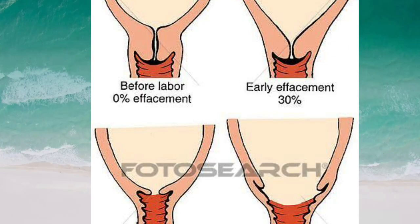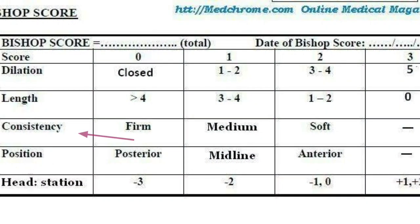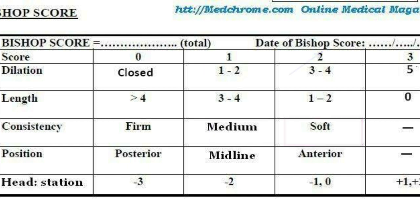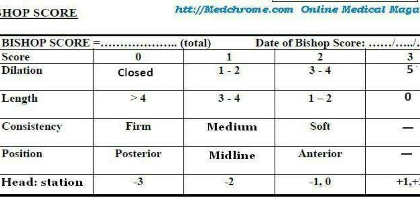The third parameter is consistency of cervix. On vaginal examination, if the cervix is firm to touch, the score is zero. If the consistency is medium, the score is one. If the cervix is completely soft, the score is two. The maximum consistency score is two, while for cervical dilation and effacement the maximum score is three.